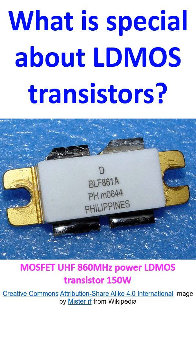LDMOS transistors have high power density, linearity, efficiency, high breakdown voltage, and low ON resistance. The ON resistance of a MOSFET, also known as the drain-source ON resistance, is the resistance between the drain and source of the MOSFET when it is in the ON state.